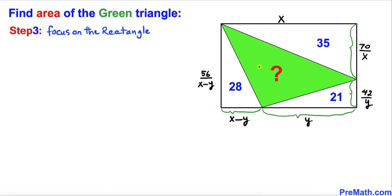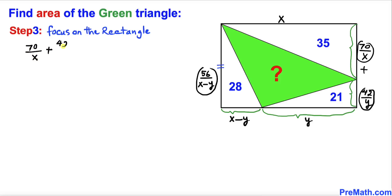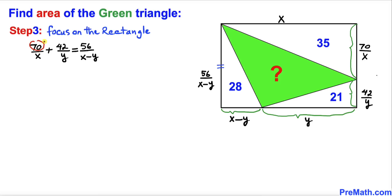Here's our next step: focusing on the rectangle, these two opposite sides are equal in length. Therefore we write: 70 divided by x plus 42 divided by y equals 56 divided by (x minus y).